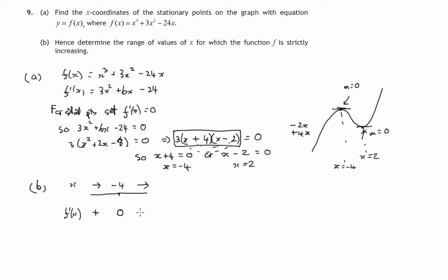So we can deduce the shape of the graph around this value x = -4. The shape of the graph is increasing, stationary and then decreasing. In other words x = -4 gives us a local maximum value. It's a maximum stationary point.